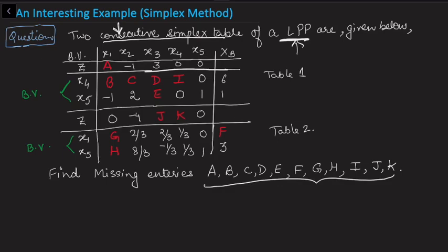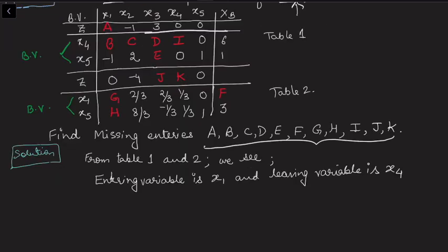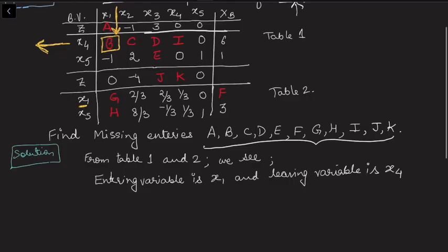From tables 1 and 2, the entering variable is x1 because x1 is appearing in the next table instead of x4, and x4 is the leaving variable. Since x1 is appearing and x4 is leaving, b is the pivot element and the row corresponding to x4 becomes the pivot row. In the next table, g should become 1 because x1 is now in the basic variable set, h has to be 0, and the zj minus cj corresponding to x1 is already 0.